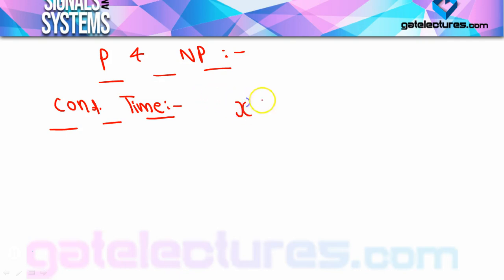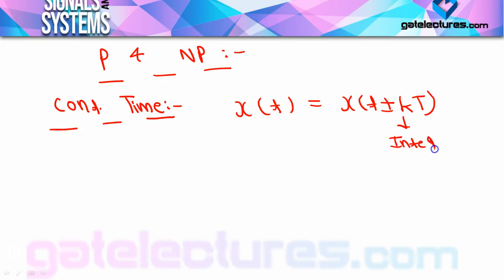जैसे अगर equation लिखूँ: x(t) = x(t ± kT), जहाँ k कोई भी integer है। Suppose k = 1 तो x(t ± T), k = 2 तो x(t ± 2T)। मतलब हर एक T के बाद, हर एक time interval के बाद, signal अपने आपको repeat करेगा। x(t) = x(t+T), x(t) = x(t−T), and so on।